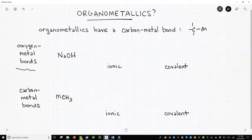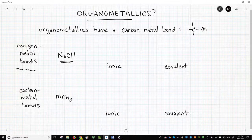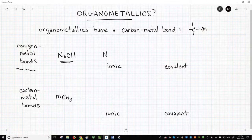You have certainly encountered lots of oxygen-metal bonds. Sodium hydroxide, as an example, has a bond between oxygen and sodium. Normally, because of the high difference in electronegativity between oxygen and sodium, this bond is represented as an ionic bond.